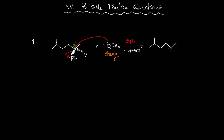When the methoxide attacks the carbon, it will push the hydrogen to the front side. So I should draw the wedge bond where I can put the hydrogen, and since this is a backside attack, the methoxide is going to be on the dashed bond, and therefore I have OCH₃ on the dashed bond.